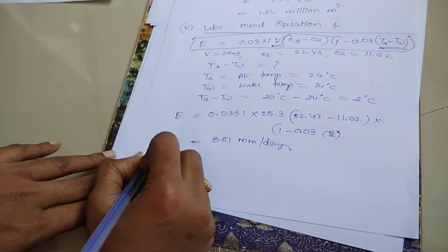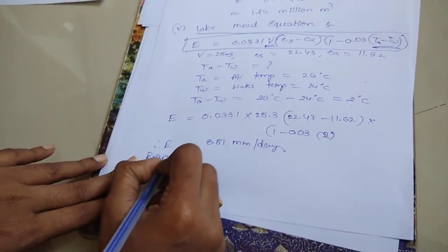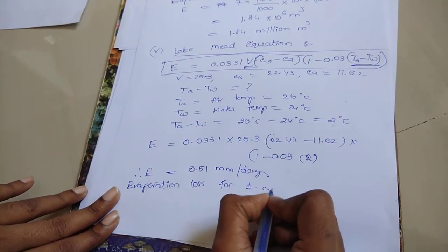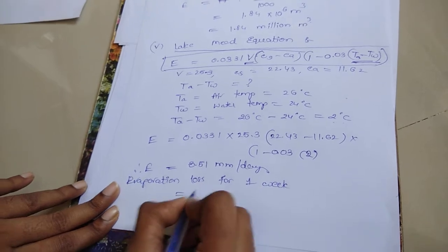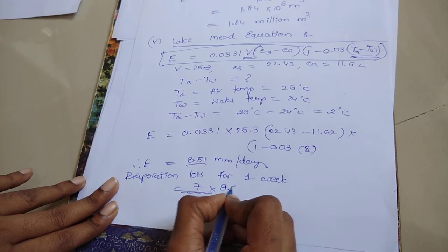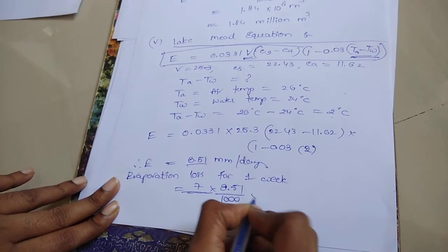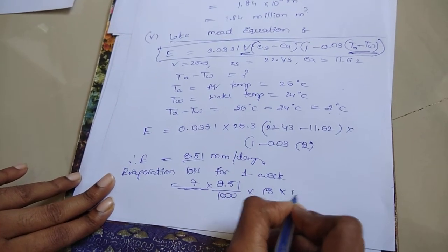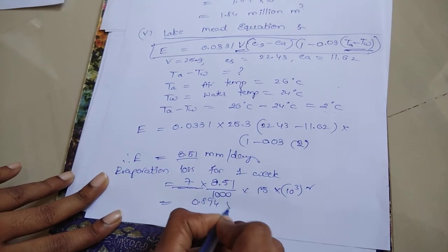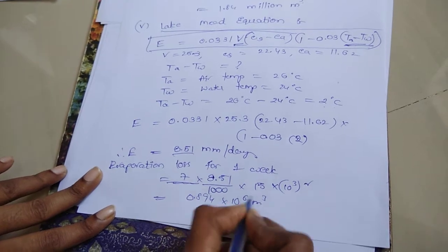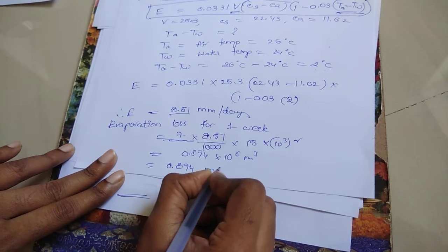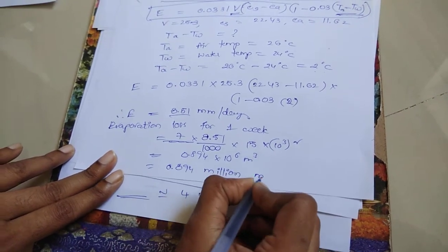So, after finding this evaporation, you have to find out the evaporation loss for 1 week. 7 days into evaporation 8.51 into area. This value is 0.894 into 10 power 6 meter cube. It is also known as 0.894 million meter cube.